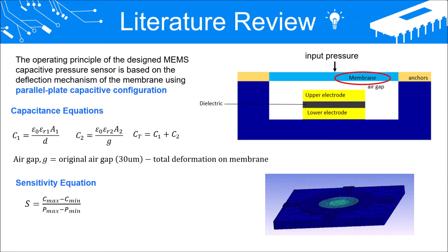The operating principle of the sensor is based on the deflection mechanism of the membrane using parallel plate capacitive configuration. As the input pressure is exerted, membrane deflection will lead to the subsequent change in air gap, capacitance, and sensitivity. C1 here is the capacitance between the upper and lower electrodes, whereas C2 is the capacitance between the upper electrode and membrane, and Ct is the total capacitance of the sensor, which is the summation of C1 and C2. Membrane deflection affecting the air gap will bring changes to C2. Sensitivity is defined as the ability to sense the difference in capacitance upon difference in pressure.